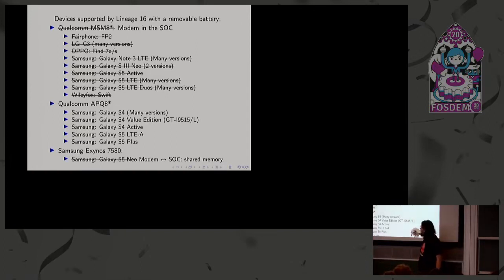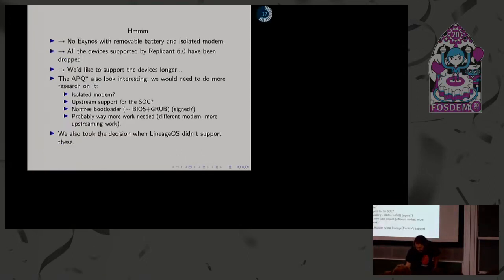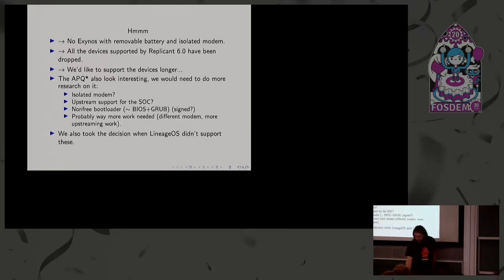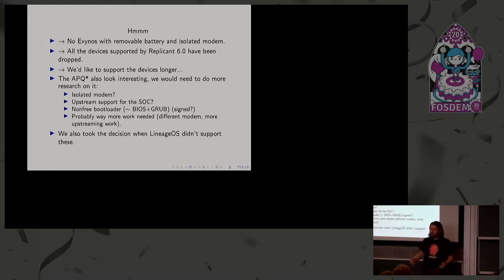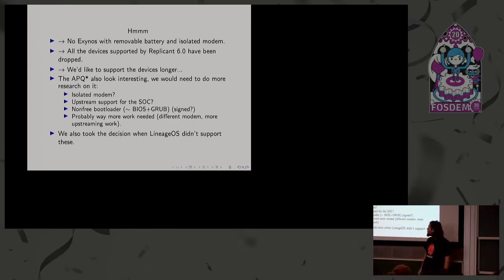Unfortunately, if we add these requirements, even the Galaxy S5 Neo has shared memory between the modem and the SoC — that's not good. What remains are the APQ devices supported by LineageOS — a Qualcomm SoC without an integrated modem, where the modem is separate. The issue is we've previously supported Exynos devices like the Galaxy S3 and Note 2, as well as OMAP devices. Supporting APQ would mean dropping all currently supported devices since they're not supported by LineageOS and use a different SoC.